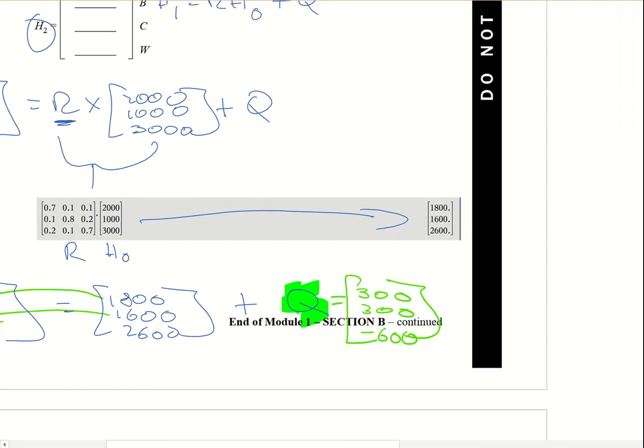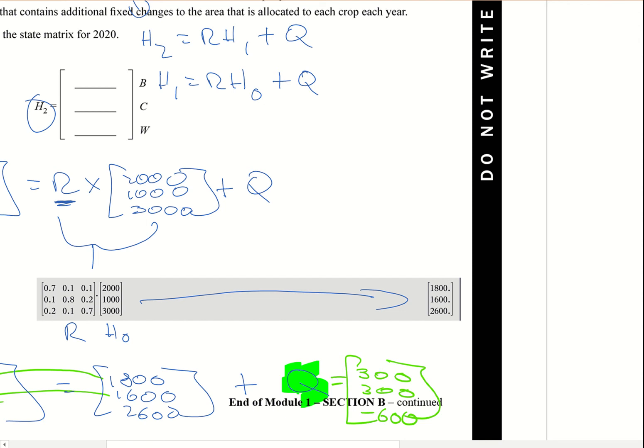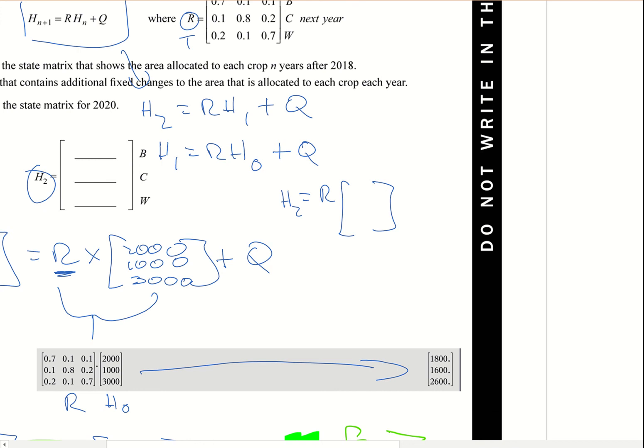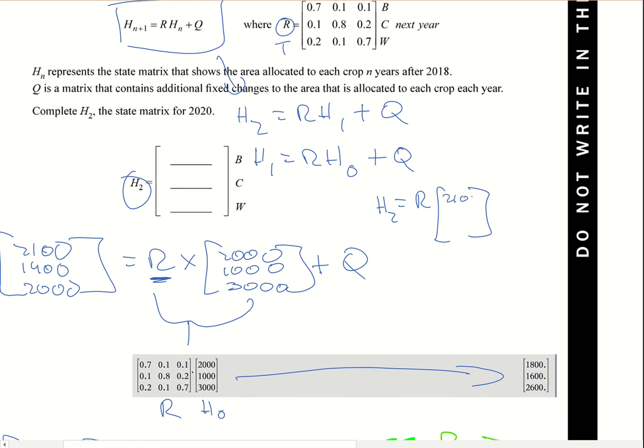Now I can go ahead and work out h2 because I've got h1. So if I want to work out what h2 is, h2 equals r which we've got, I'm not going to write that because it takes too long, and I've got h1 which we just calculated here - it's 2100, 1900, 2000.